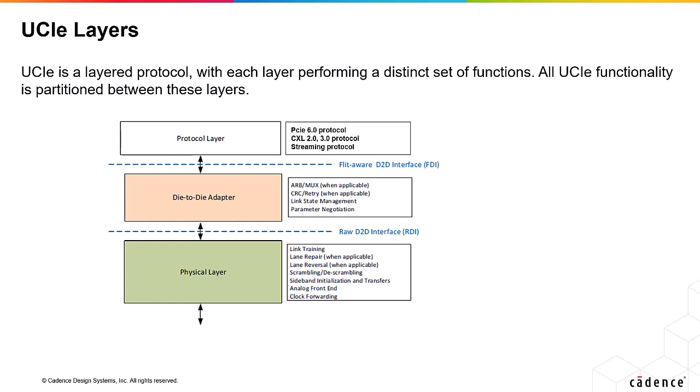The physical layer supports link training, lane repair, lane reversal, scrambling, and descrambling. It also supports analog front end, clock forwarding, sideband initialization, and transfers. Subsequent slides give more details of these layers' functionalities.